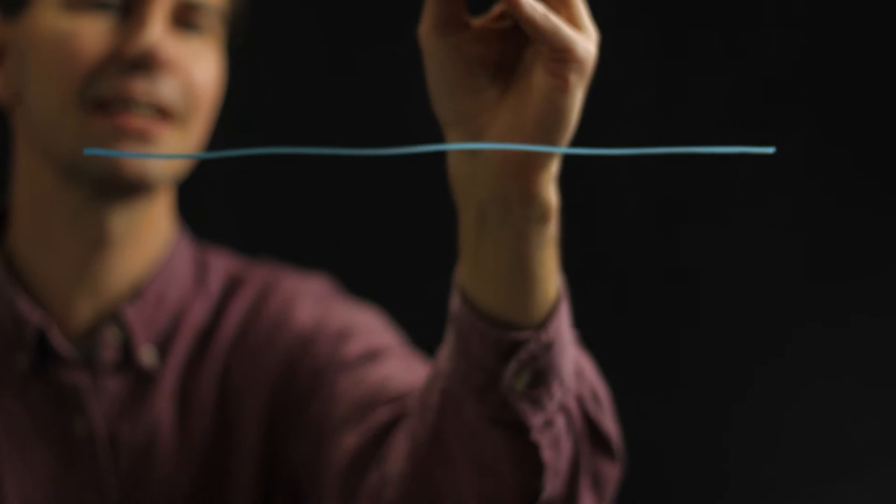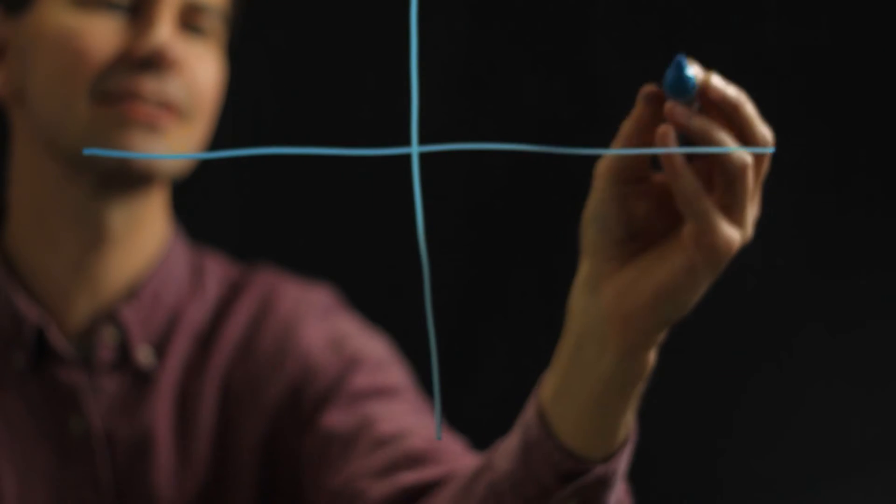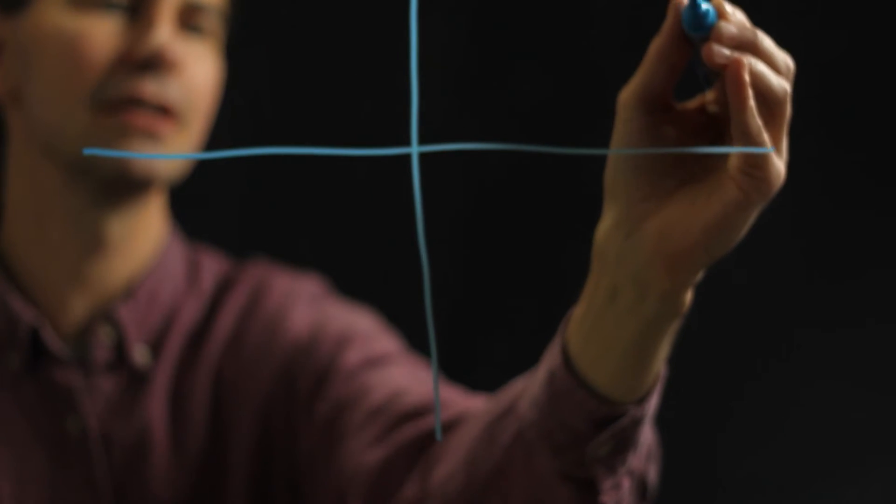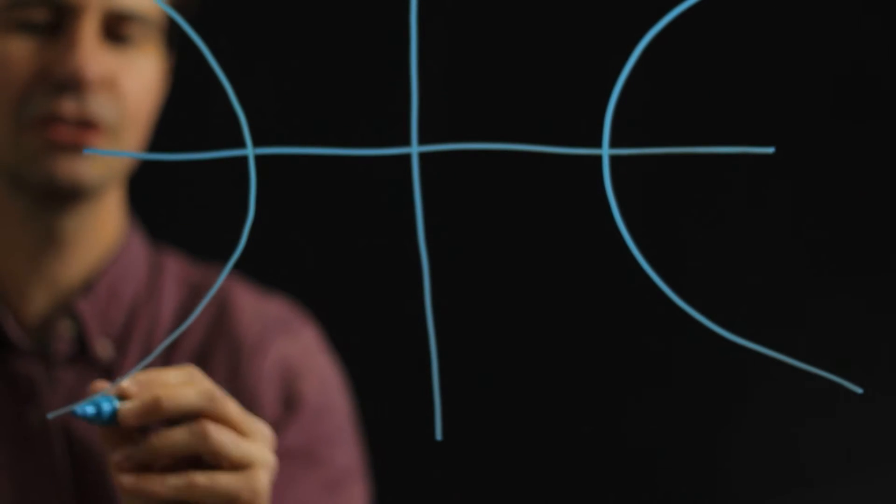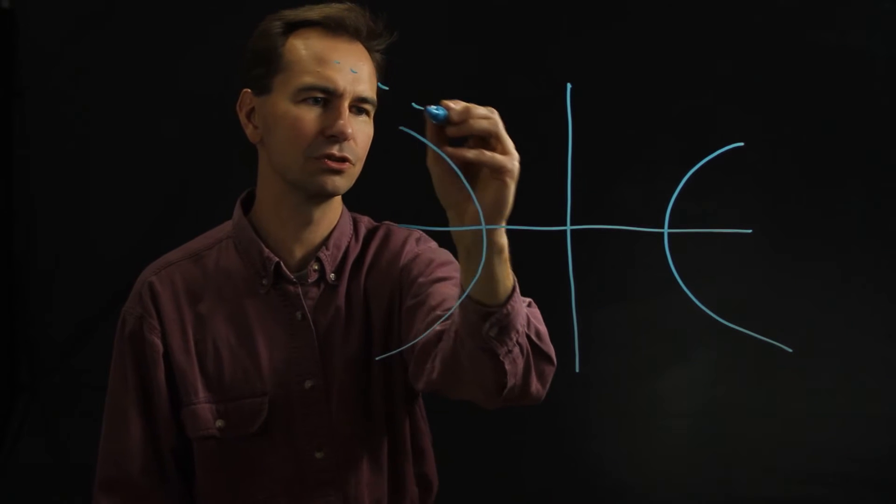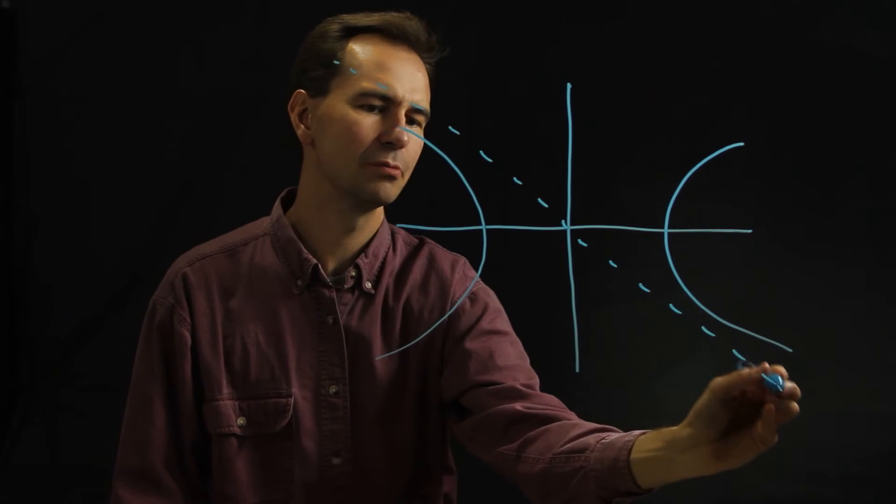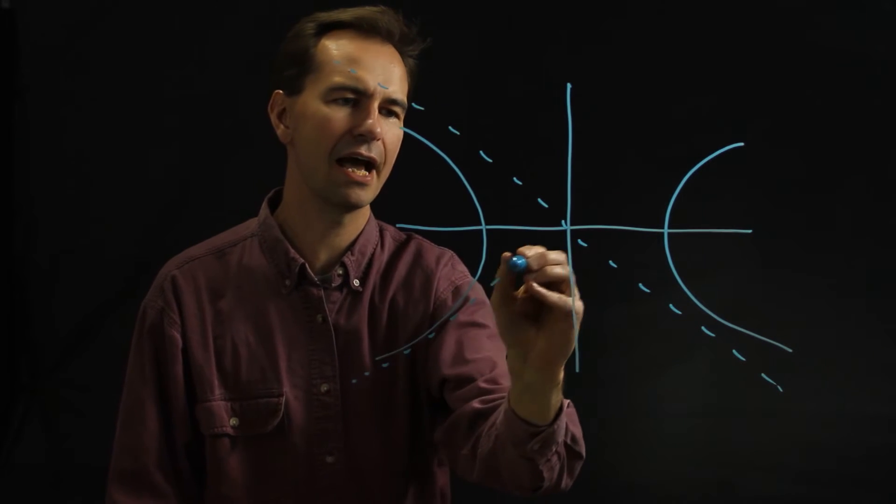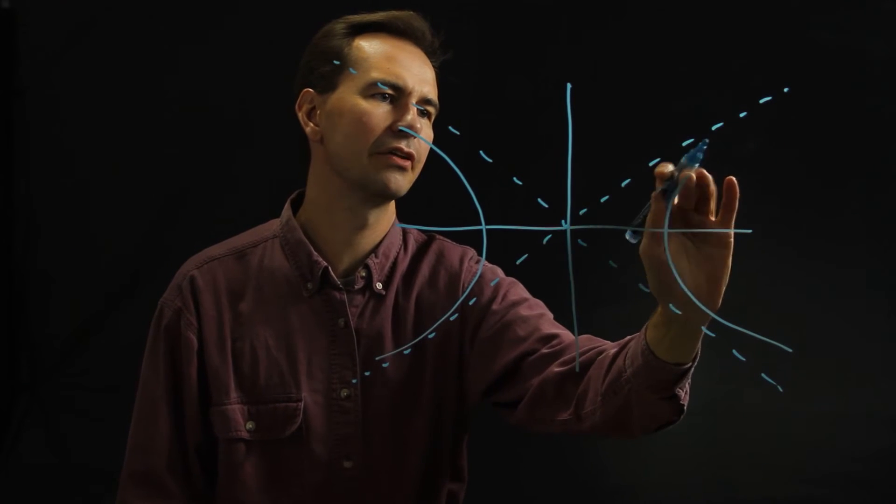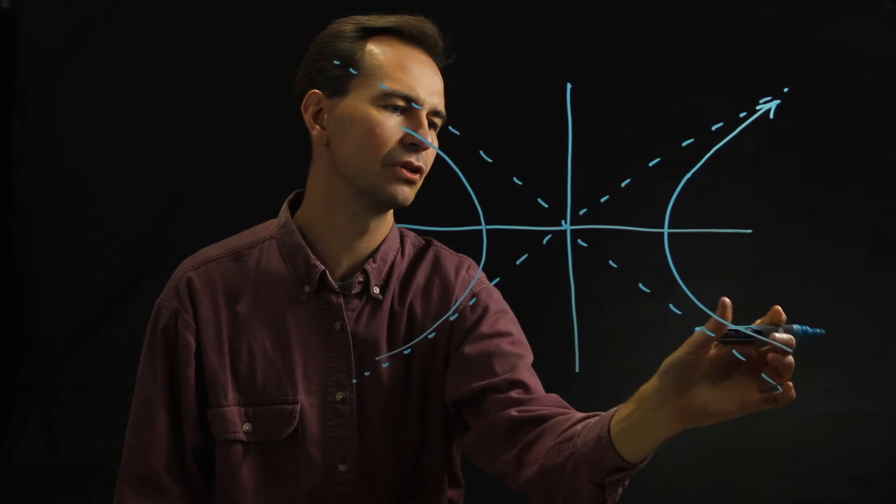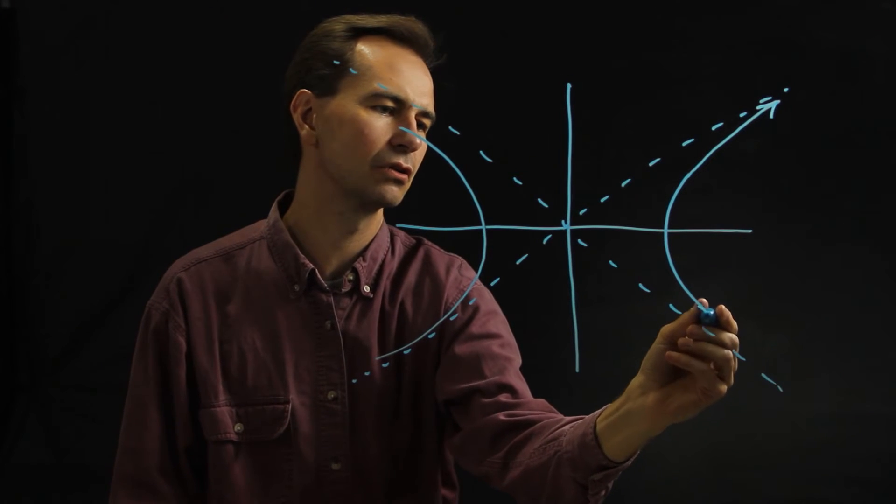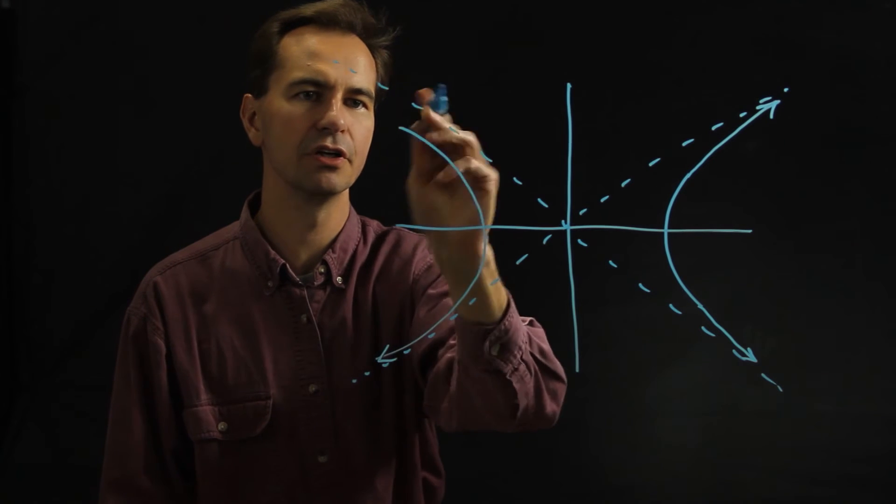So if you graph that then you get something that looks something like this. Here's your x-axis, here's your y-axis and a hyperbola looks something like that. It turns out that these sides approach some imaginary lines called asymptotes so I really ought to draw that a little better. That line gets closer and closer to that asymptote. This line gets closer and closer to that asymptote and same thing over here.